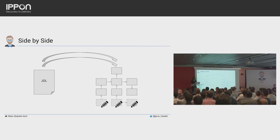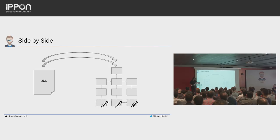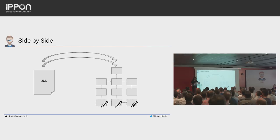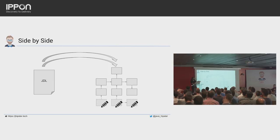The good thing is our model changes very often because we're even discovering our business as we go. We change the JDL — which is our main point of reference — it generates new classes, and we create new classes and change them. This is what we've done on the two other projects, sponsoring and accounting, and we'll keep working this way. In fact, this week I regenerated our code upgrading from JHipster 4 to 5 and it worked fairly well because we extend some classes.